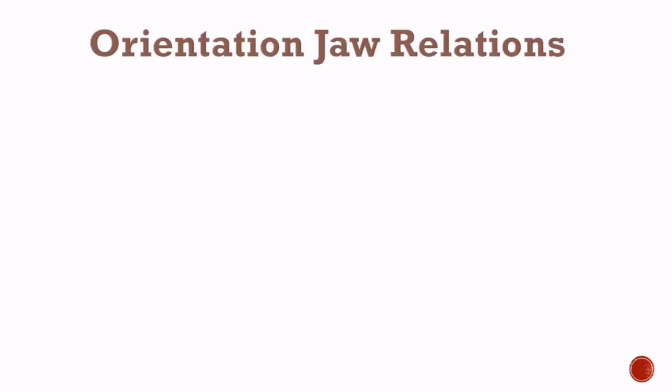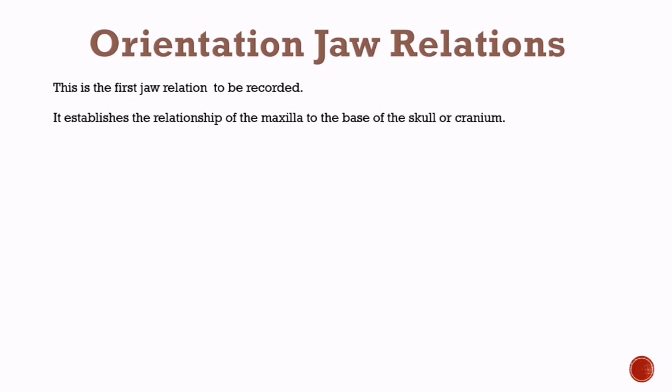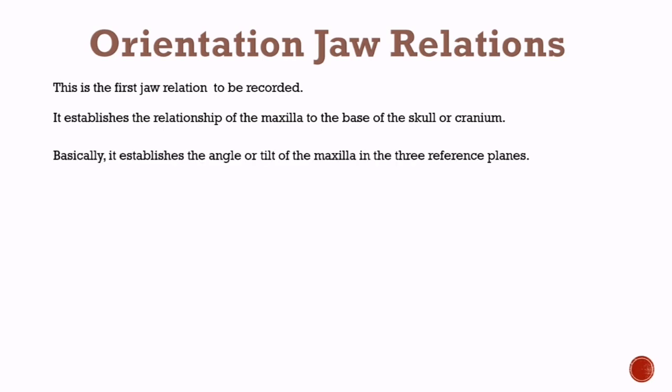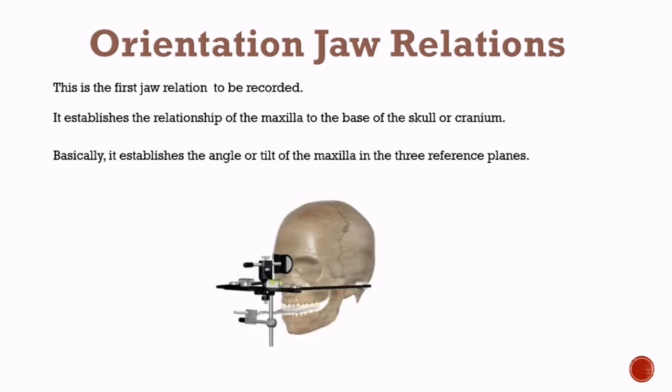Now let's know about orientation jaw relations in detail. This is the first jaw relation to be recorded. It establishes the relationship of the maxilla to the base of the skull or cranium, and basically establishes the angle or tilt of the maxilla in the three reference planes.